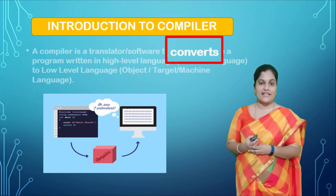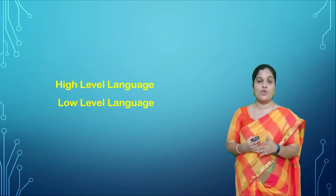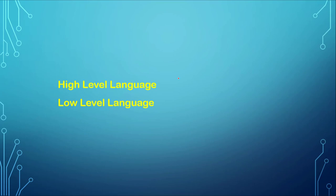Let me tell you what is a high level language and what is a low level language. Generally, programmers write programs in English language because we are very familiar with it — it is flexible, and we can easily understand the syntax, semantics, and structure. But a problem arises when we try to get output from this high level language, because machines do not understand high level language.